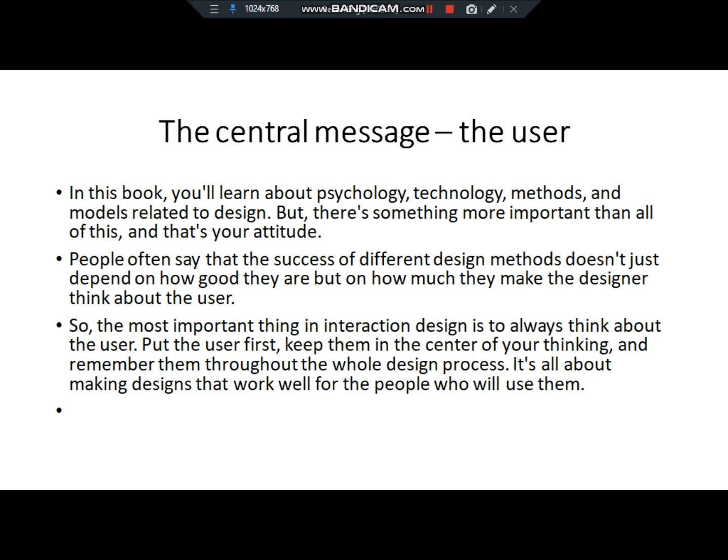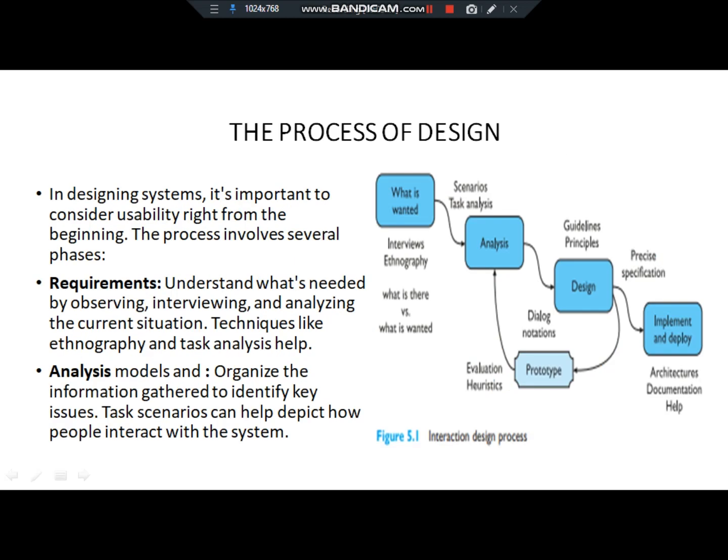One of the most important features is making sure the user is not confused. The center message is about the user. In the design process, we start with requirement analysis — identifying what is needed by observing and analyzing the current situation. Techniques like ethnography and task analysis help. Task scenarios can help detect how people interact with the system and identify key issues.